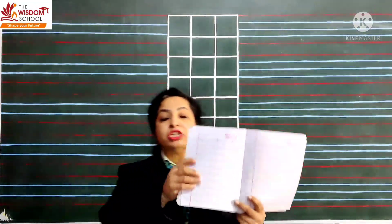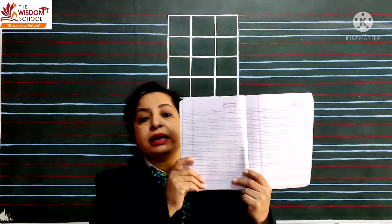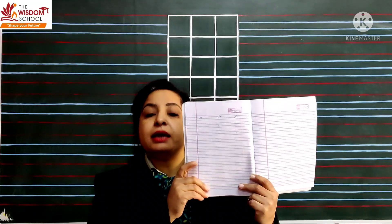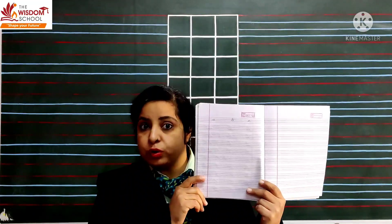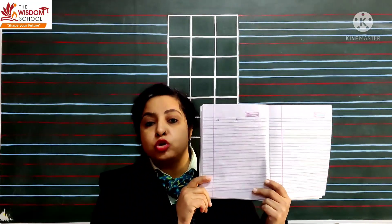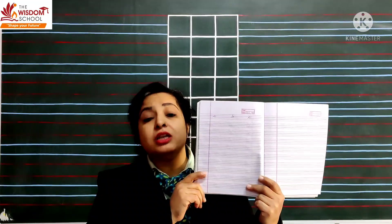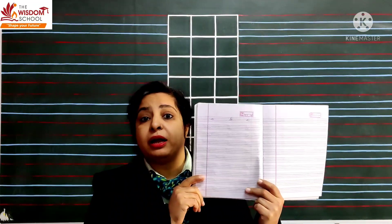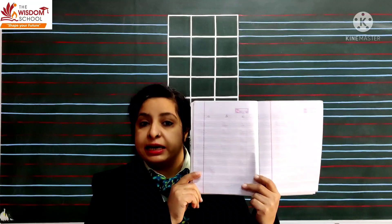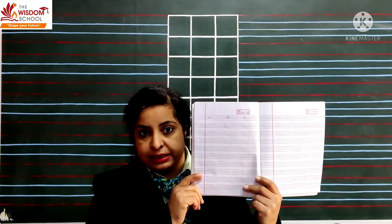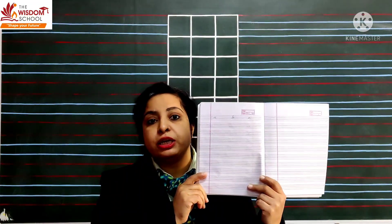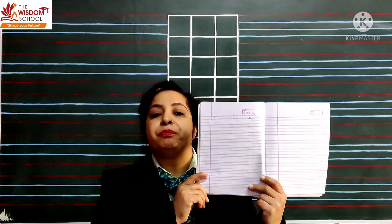Aaj haamne aapne English ki class me, bachche, only three letters. Jo haamne cursive start kar rahe kiye. Mujhe pata hai, aap A to L kar chuke ho. Koi baat nahi, bachche, lekin kuch bachche aise bhi hai, jinko abhi cursive karne me, problem aa rahi hai. Toh, ek baar haam phir se starting se le rahe hai, two, three letters karke. Taa ki unka bhi achche se clear ho jaye, aur aap ki practice ho jaye. Ok, bachche?